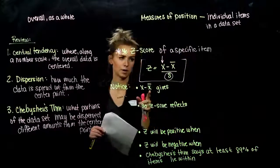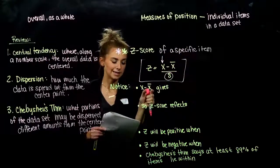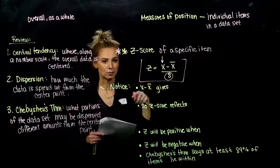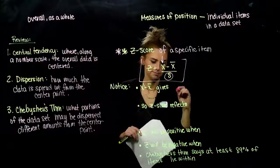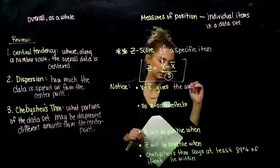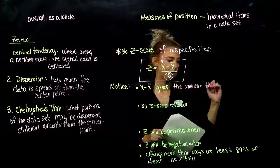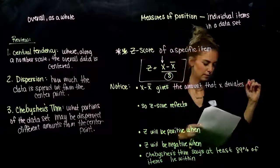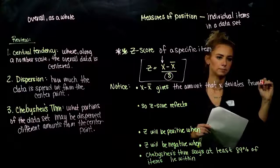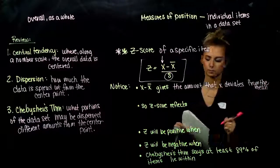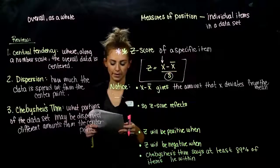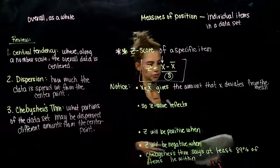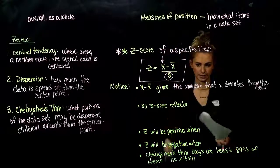So X minus X-bar gives us the amount that X actually deviates from the mean — we've calculated that a lot when figuring out standard deviation. That gives the amount the data item deviates from the mean. It tells us how far away and the direction as well: could be positive or negative, to the left or to the right, similar to how we were looking at deviation before.